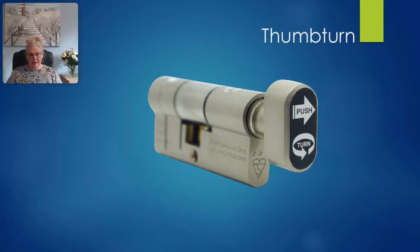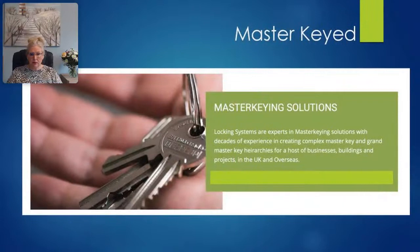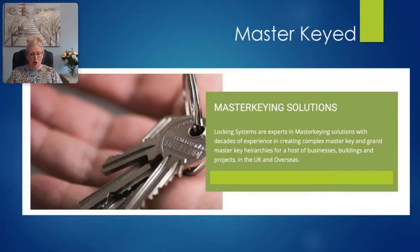Keyed alike means using the same key for two or more cylinders instead of requiring different keys — for example, the same key for a pair of cylinders fitted in double doors, or to access your property from both the front and back door. A master key system means that authorised people can access different doors within a system using just one key. For example, a tenant in sheltered accommodation has their own individual flat door key that will not open any other door, but the caretaker could have a master key to operate all locks in the building, needing only one key to access the entire site.